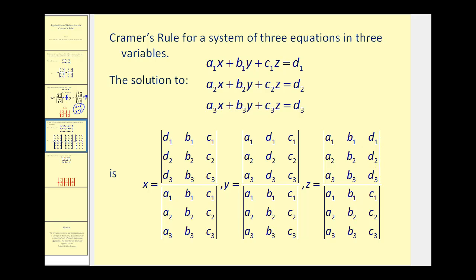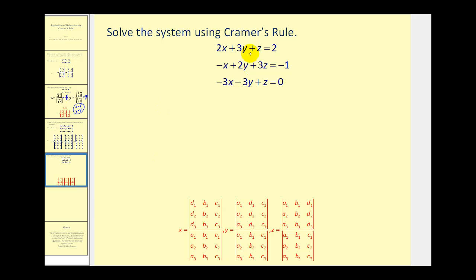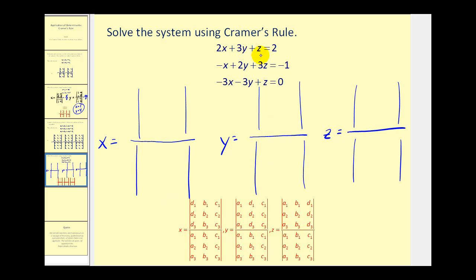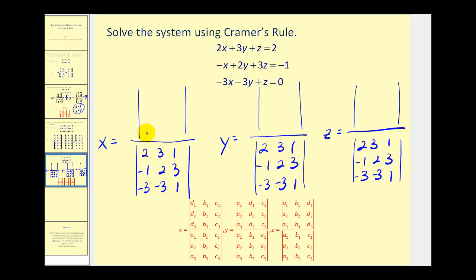So let's go ahead and try one of these as well. We'll have x, y, and z — each will be a quotient of determinants. Each of the determinants in the denominator will come from the coefficients of these three equations, so the first row will be two, three, one; the second row negative one, two, three; and the third row negative three, negative three, one. Each of these denominators will be the same. The numerator for x will come from the determinant formed by replacing the x coefficients with the constants two, negative one, zero, and the next two columns stay the same.